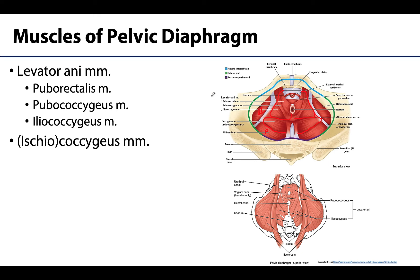The levator ani muscle is often subdivided into separately named portions according to the pelvic viscera to which it is related and its attachment points, though they are very much continuous and often difficult to differentiate. The puborectalis tends to be the most medial portion, attaching anteriorly to the pubic bone and meeting its contralateral counterpart to form a sling around the rectum. Puborectalis is sometimes considered simply a component of the pubococcygeus muscle.